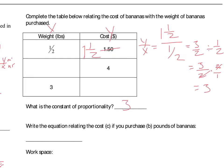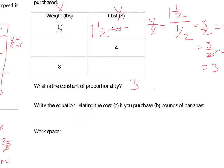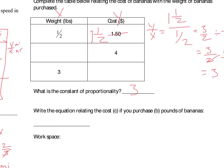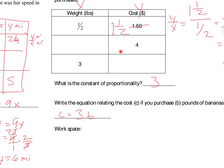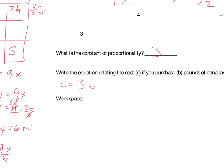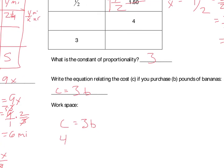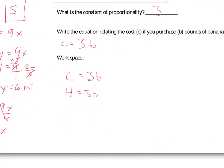That allows me to write my equation: cost C equals three times the amount of bananas B. Now I fill in the rest of the table. In the situation where my cost is four dollars, I plug that in for C: four is equal to three B. Dividing both sides by three — three over three becomes one — I get four-thirds equals B. I can simplify that to one and one-third, but I'm happy with the improper fraction: four-thirds of a pound, or one and one-third pounds of bananas.